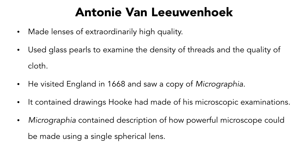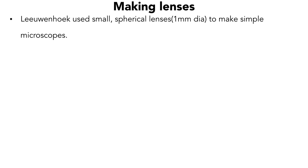Leeuwenhoek used small spherical lenses to make his simple microscope. The lenses had a diameter of approximately 1 mm, and because a smaller diameter gives more magnification, Leeuwenhoek could observe very minute objects with good magnification using his microscopes.